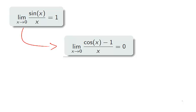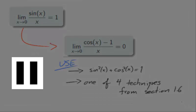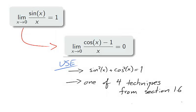Another way the identity of sine x over x is important is in calculating the identity of cosine minus 1 over x as x goes to 0. Pause the video and challenge yourself to justifying this identity. Along with knowing the limit of sine x over x as x goes to 0, you need the identity that sine squared plus cosine squared equals 1, and you should use one of the four techniques outlined in section 1.6.